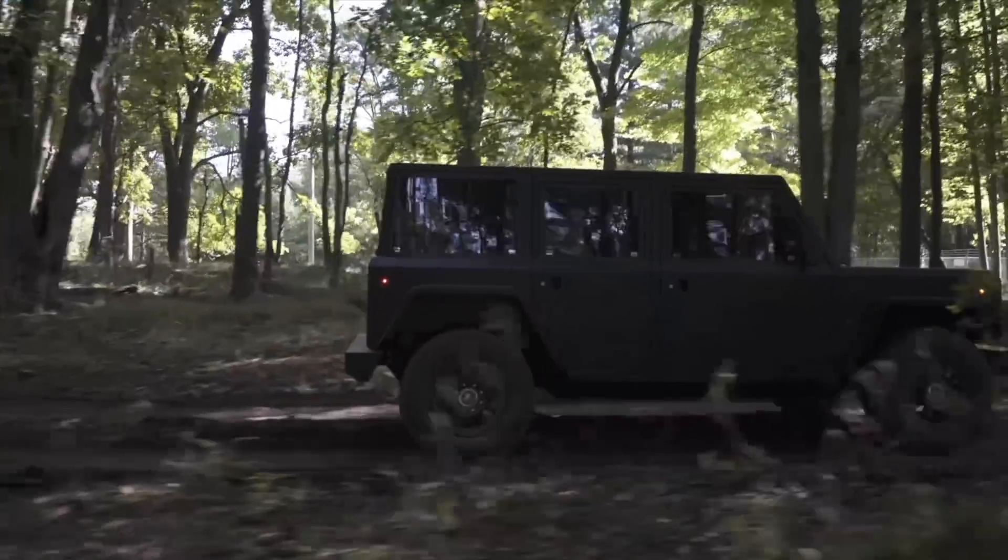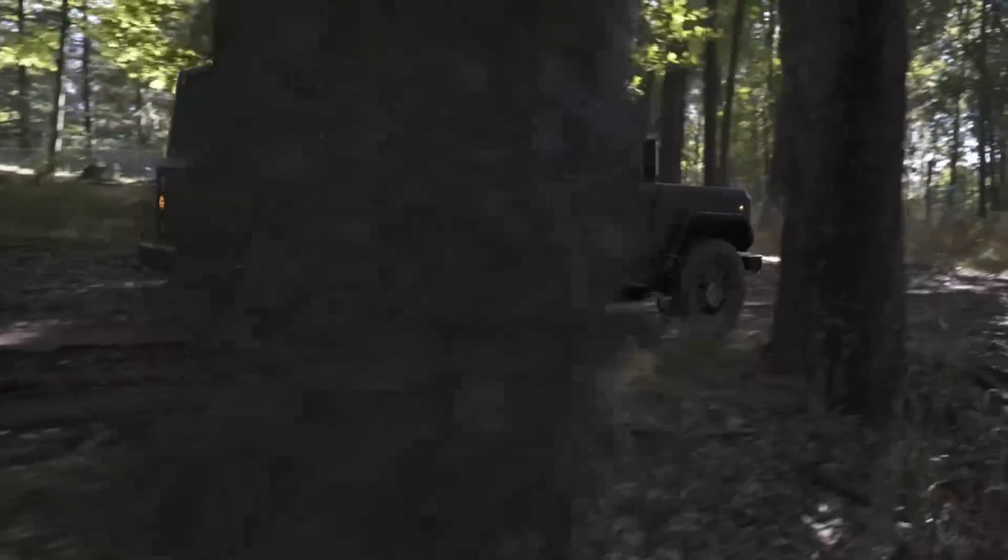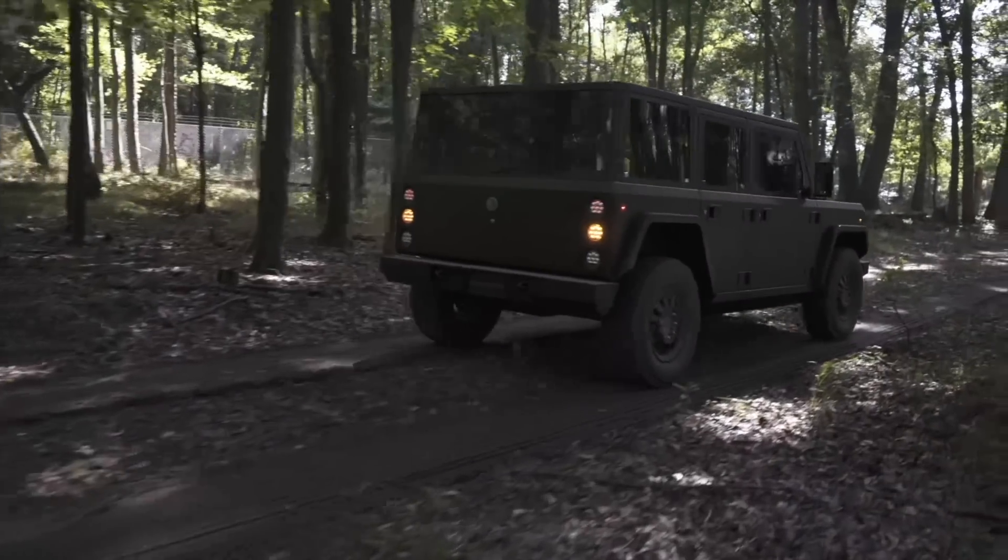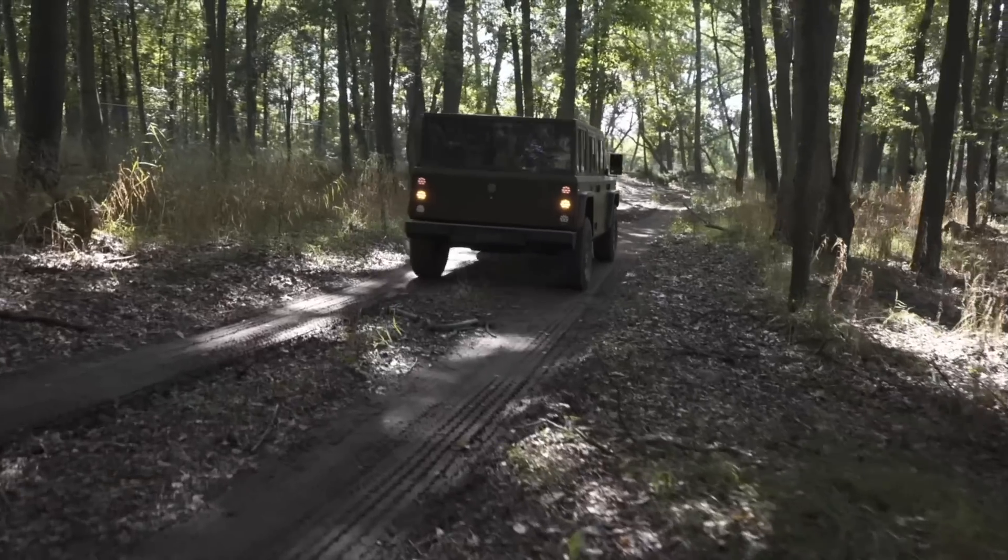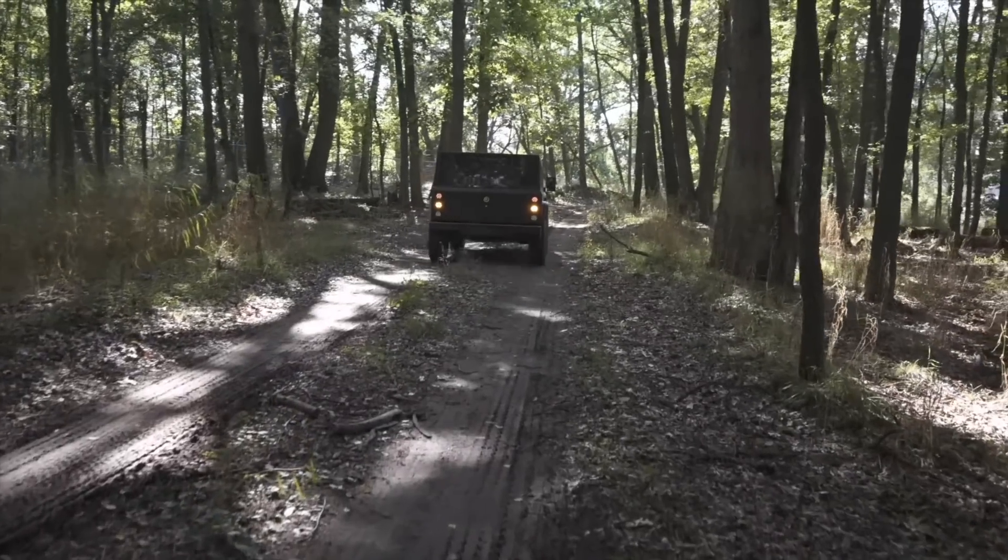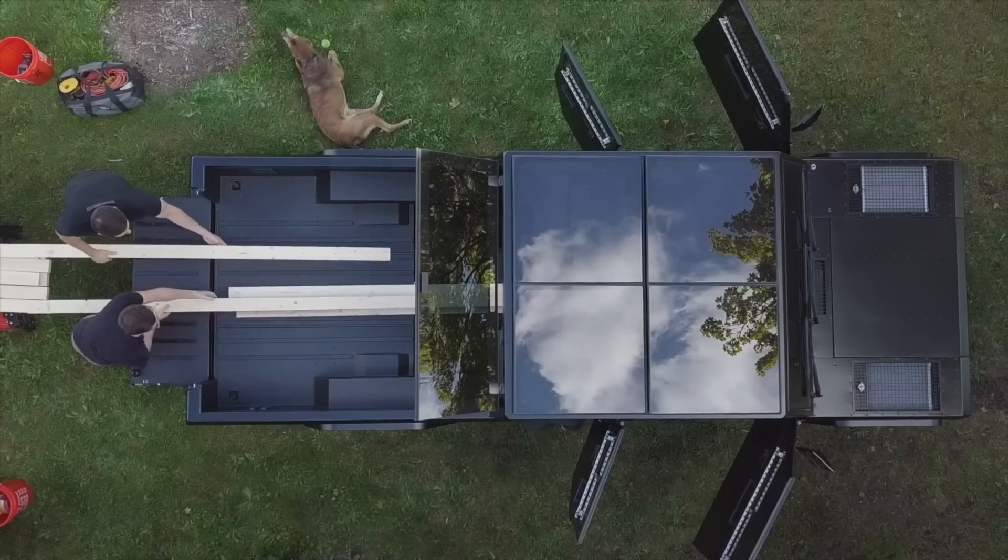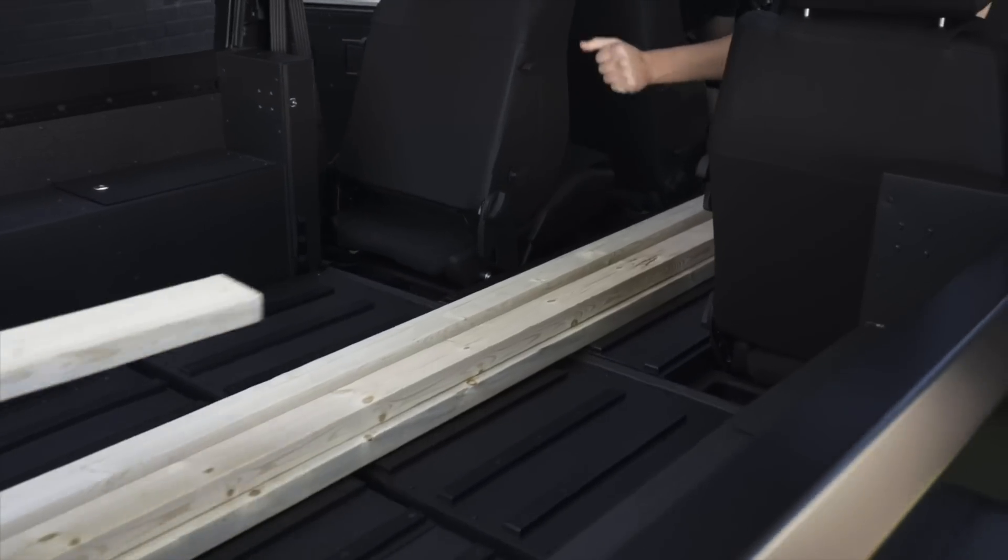But US startup Bollinger has gone one step further. You'll see its B1 and B2 electric S.U.T. and pick-up feature a special door in the bulkhead from the front trunk into the cabin, and then there's another one from the cabin into the load bay area or pick-up bed at the rear, depending on the vehicle.